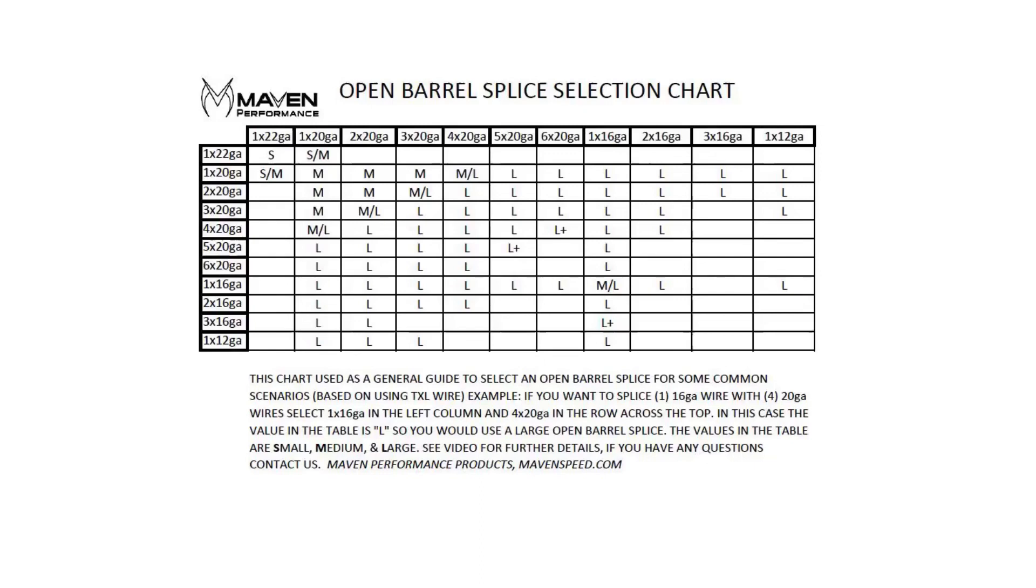If there is nothing in the cell, then that means it's outside the realm of the splices that we're talking about right now. So we'll go ahead and proceed. Again, we're going to use two 20-gauges, that's going to go into a single 20-gauge, and we'll use a medium splice on it.